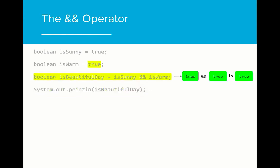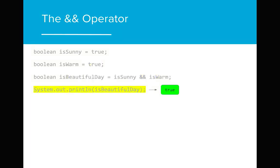If we change the value of is warm to true, however, the result will change. Is beautiful day now evaluates to true because the value of is sunny and is warm both evaluate to true. The final result printed will be true.